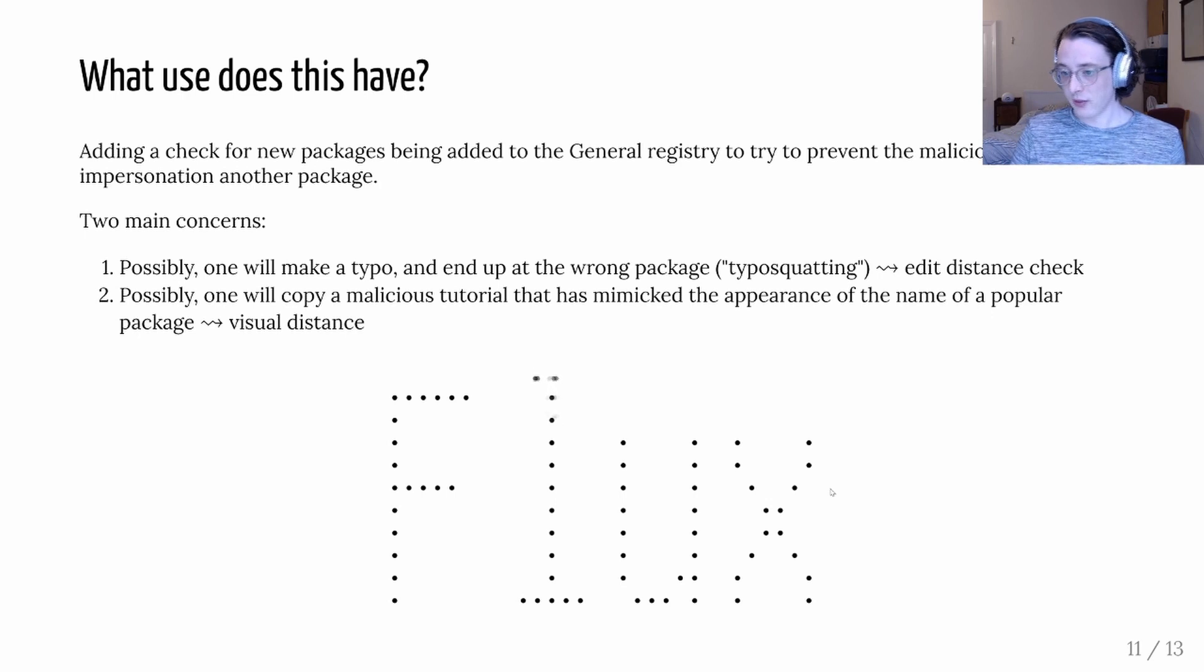So it's called typo squatting and one thing we could do is add an edit distance based check maybe where the distance is weighted by the likelihood of making a typo to get from one package to another based on the configuration of keyboards and all that.